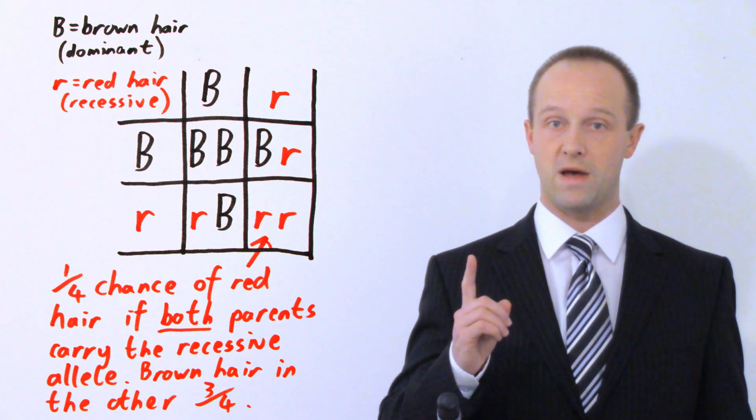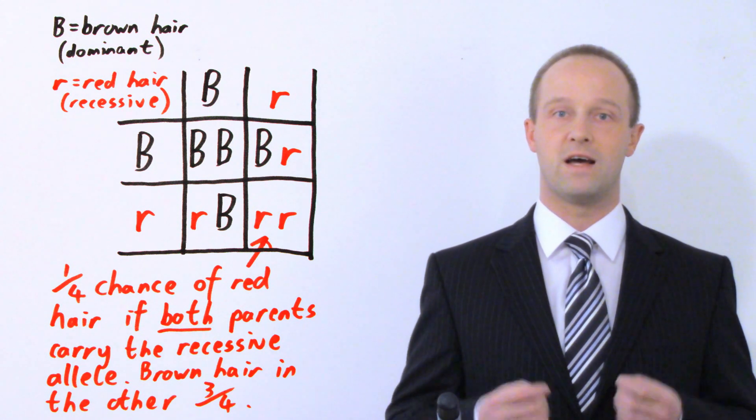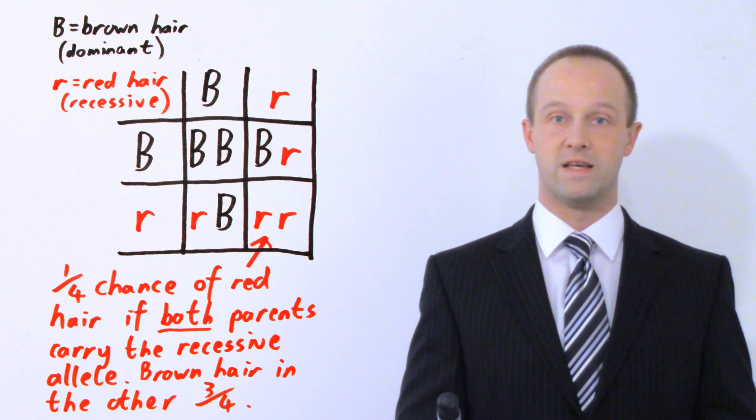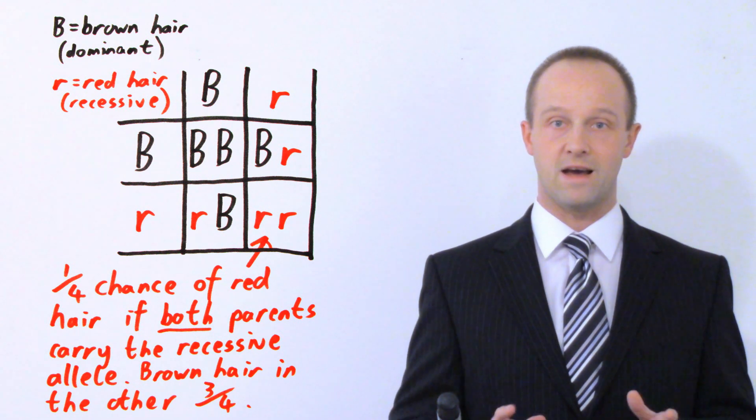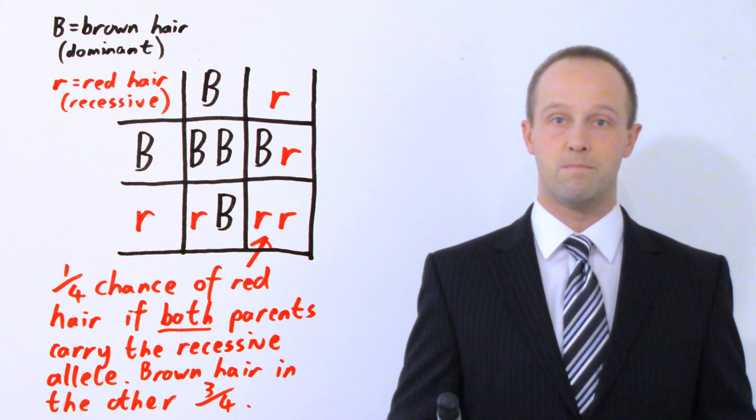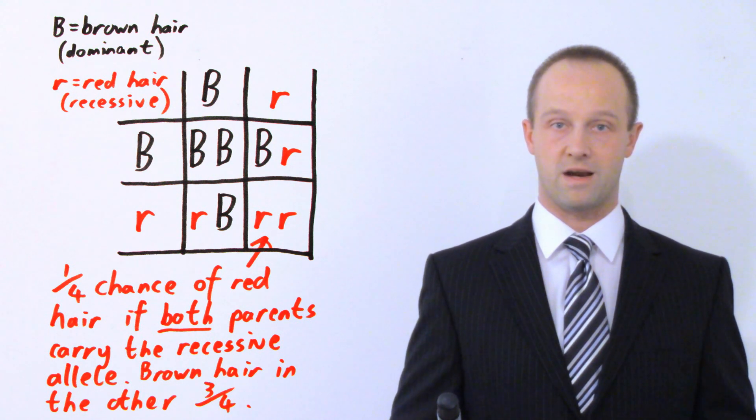Now, some types of allele — remember, an allele is just a form of a gene, such as those controlling hair colour or eye colour — are what we call dominant. That means it only needs to be present from one parent in order to control the development of that characteristic. For example, you might only need the gene for brown hair from one parent for the child to have brown hair. Another type is a recessive allele, which must be present from both parents for that characteristic to develop.